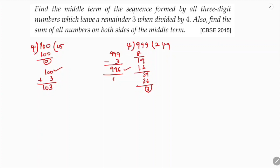The last number: adding 3 to 996 gives 999. So the series starts at 103, and adding 4 each time gives 107, 111, and so on. The last number is 999. This is the series of 3-digit numbers divisible by 4 that leave remainder 3.